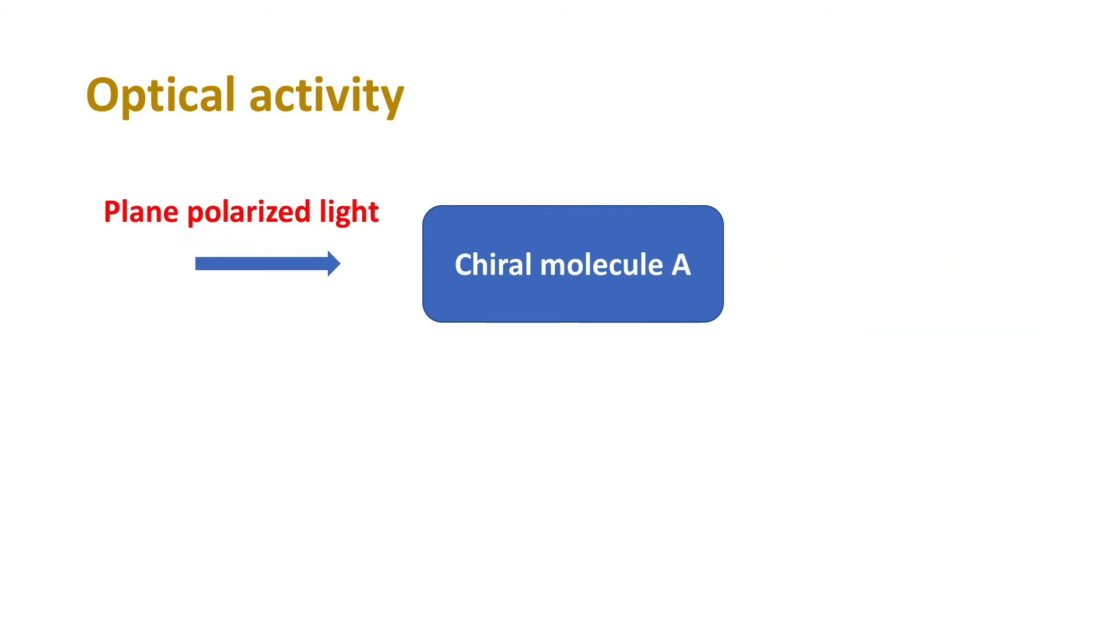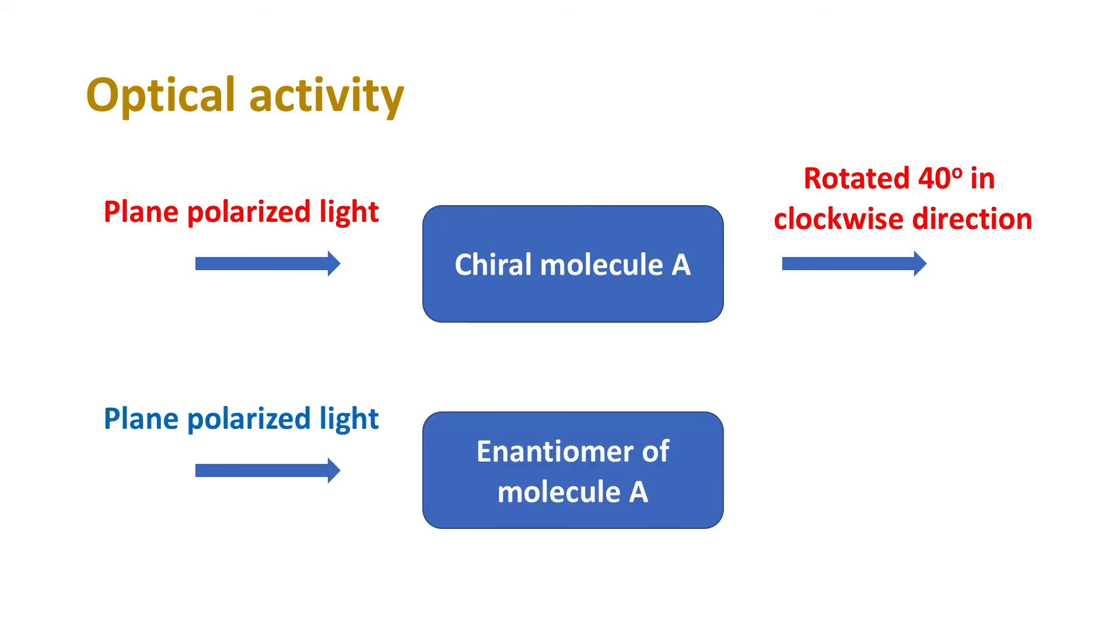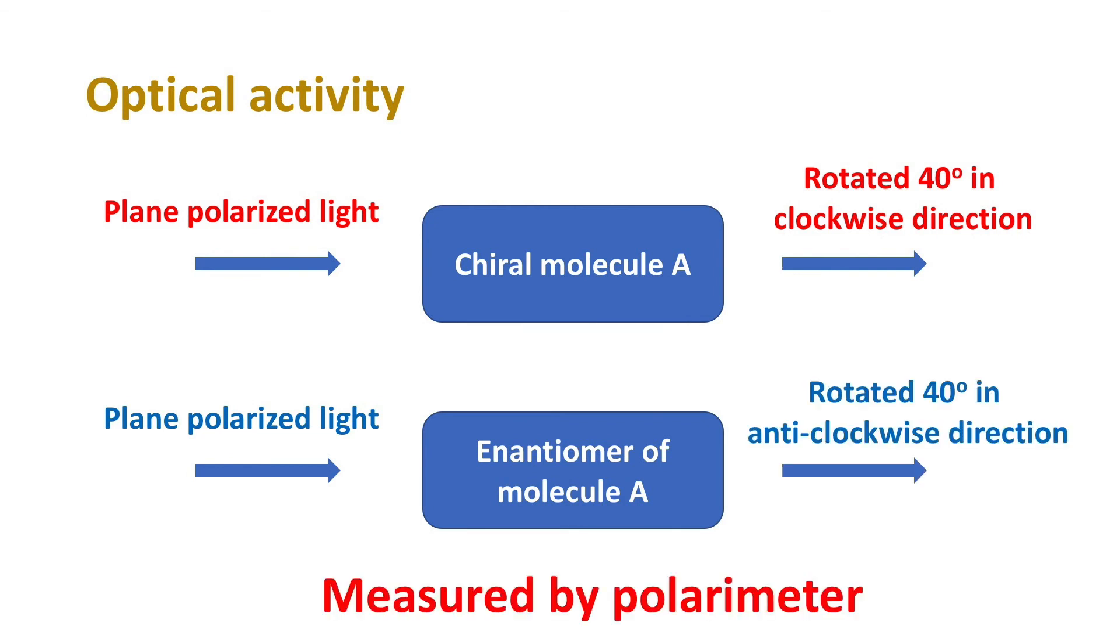While its enantiomer can rotate the plane polarized light to the same angle but in opposite direction. Here is an example. If this molecule can rotate the plane polarized light for 40 degrees in clockwise direction, then its enantiomer, which is its mirror image, can rotate the plane polarized light for 40 degrees in anticlockwise direction. And this difference can be measured by using polarimeter.